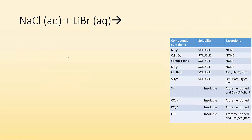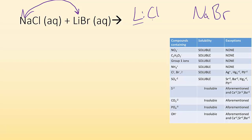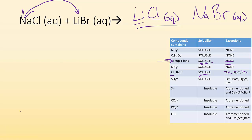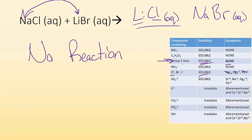Let's look at another example: sodium chloride with lithium bromide. If I switch partners — swap sodium and lithium — I get LiCl and NaBr. Checking solubility: Cl⁻ is soluble and Li isn't an exception, so LiCl is soluble, aqueous. Lithium is also a group 1 ion — soluble without exception. NaBr: sodium is a group 1 metal, soluble without exception, also aqueous. So no reaction because there are no insoluble pairings for the new products.